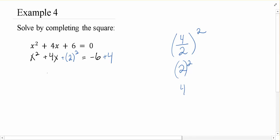So that our factored form is nice and easy of x plus 2 squared. Negative 6 plus 4 is negative 2.